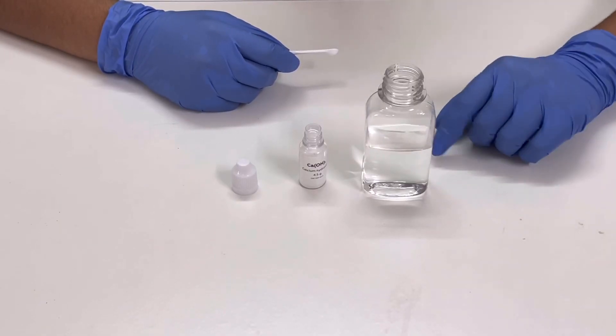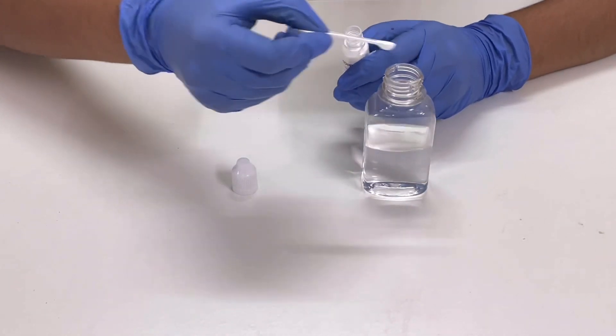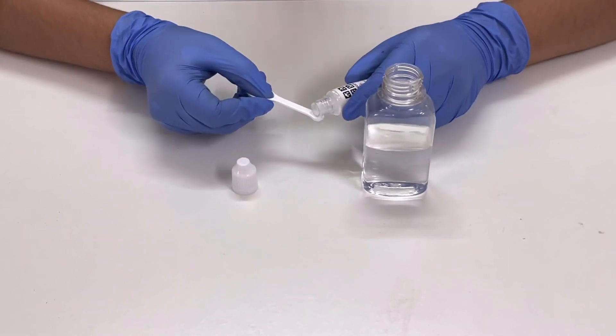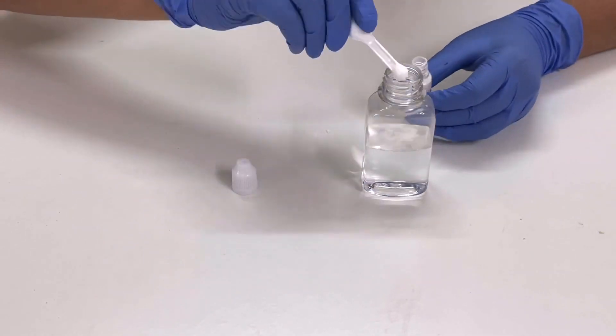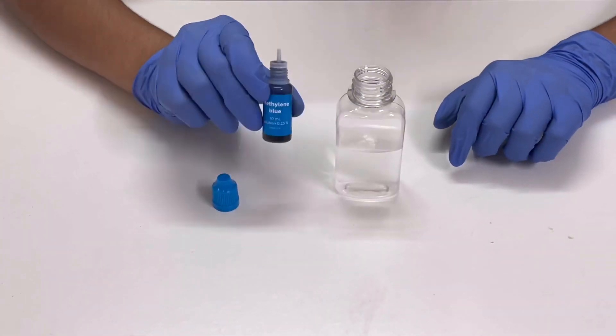I have filled water in this bottle and now I will add 2 small spoons of calcium hydroxide. Now I will add 5 drops of methylene blue.